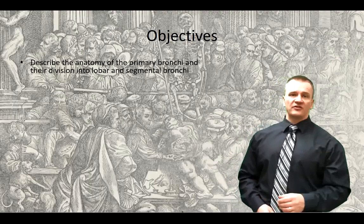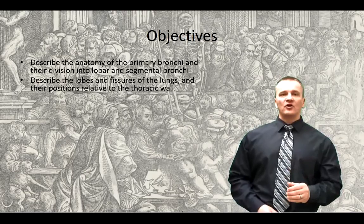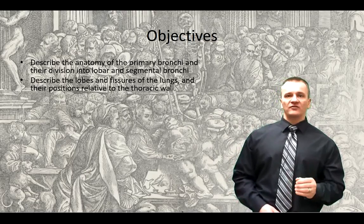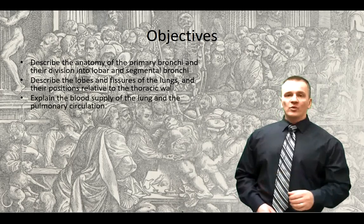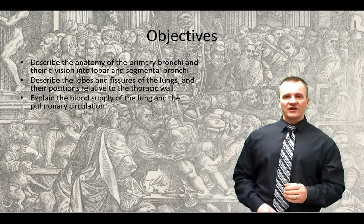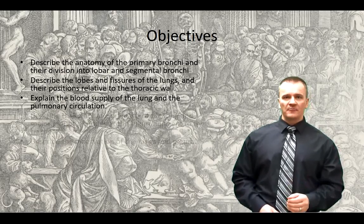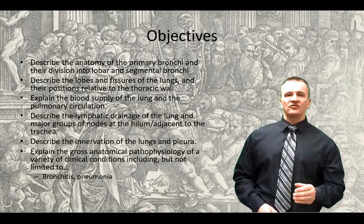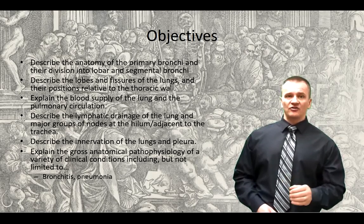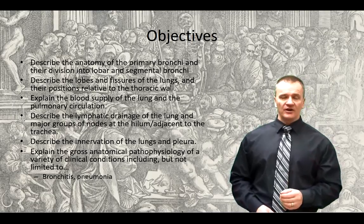Our objectives for this session: first we'll look at the various lobes and fissures associated with each lung and their position relative to the thoracic wall. We will also look at the blood supply of the lung, differentiating between systemic and pulmonary circulation to the lungs. We will also look at innervation to the lung, lymphatic drainage of the interstitium, and discuss the relevance of these topics related to a number of clinical scenarios.